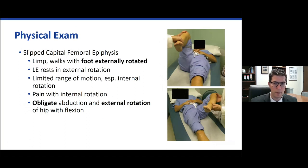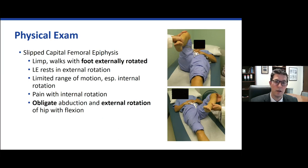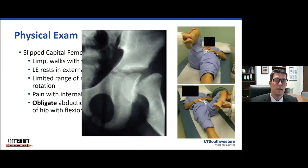I'd be remiss if I didn't briefly talk about slipped capital femoral epiphysis. We talked about limited internal rotation — if a patient is coming in with hip pain, particularly if they're an adolescent and obese, you need to look out for specific factors. If they're limping, walking with their foot externally rotated, or have limitations in internal rotation, then you start thinking about slipped capital femoral epiphysis. Specifically, if they have obligate external rotation, that's nearly pathognomonic for this condition. As you flex the patient's hip up, normally we can maintain neutral alignment with the knee pointing straight up. However, with SCFE there's some deformity of the proximal femur, and the patient won't be able to flex their hip straight up — they'll have to turn their leg out into external rotation in order to accommodate further flexion. If you see that, you need to get an AP pelvis film to make sure you don't miss the slip.